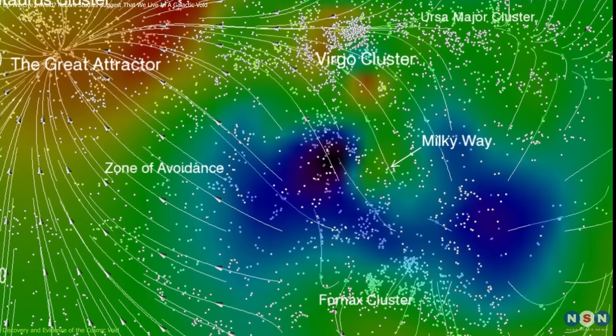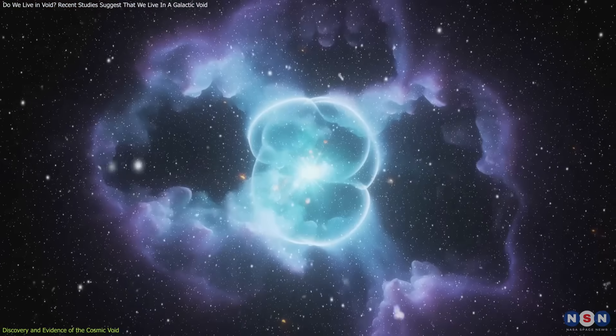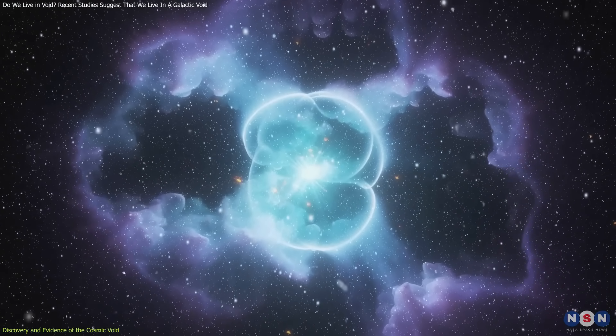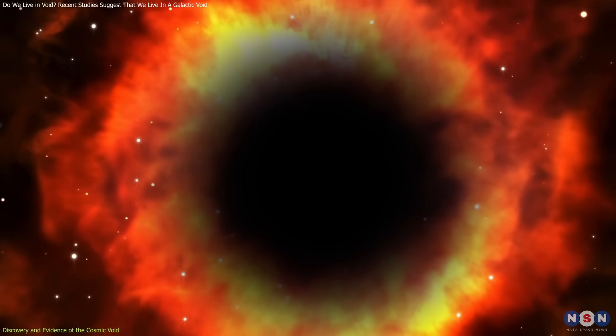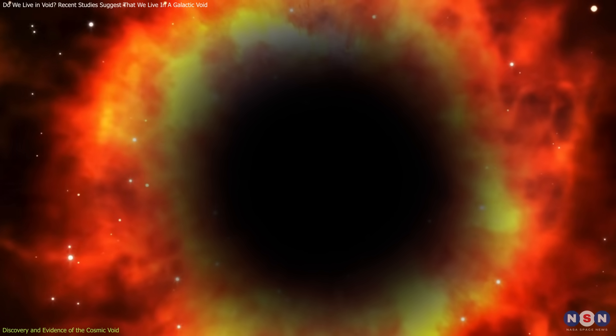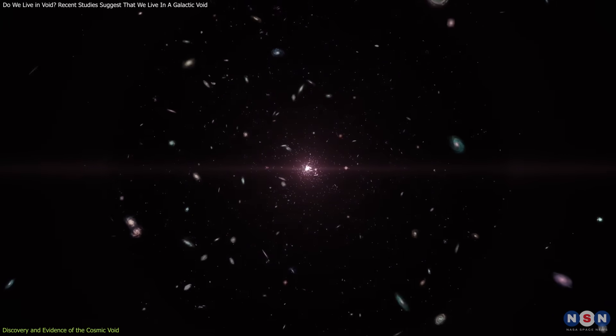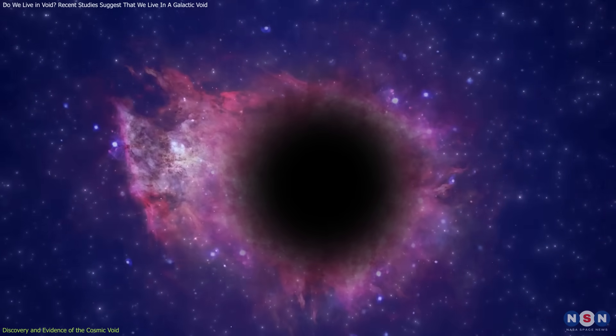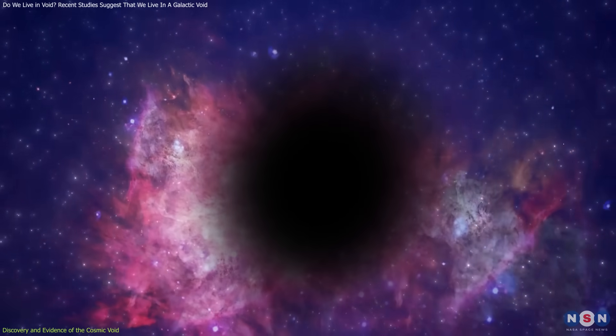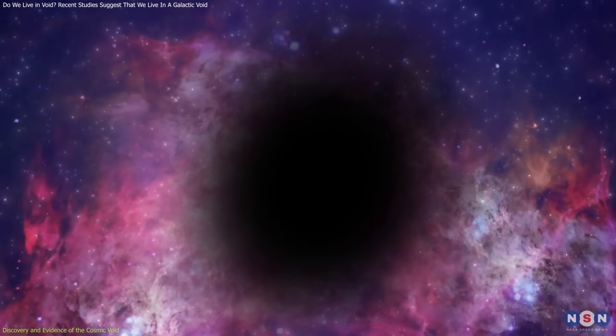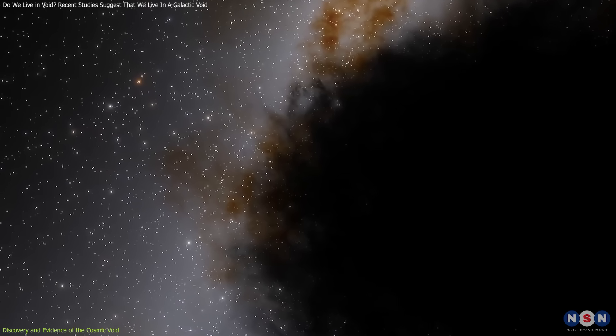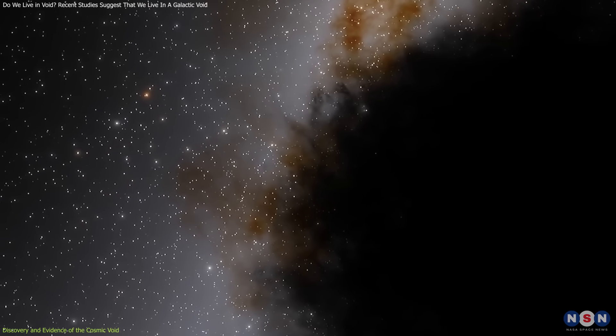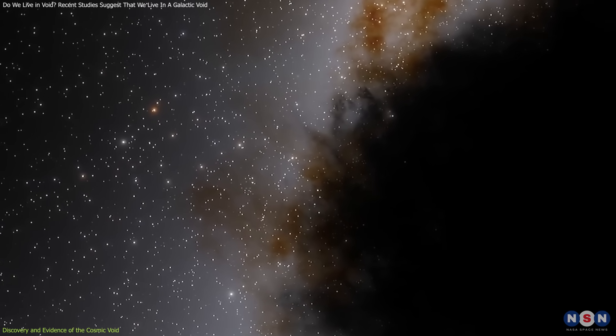This void, with its lower density, might be causing what Bannock describes as outflows of matter, where the gravitational pull from denser surrounding areas could be drawing matter out from the void, accelerating the local expansion rate. This idea of gravitational outflows introduces a radical notion that gravity itself might behave differently across the vast stretches of a void compared to more densely packed regions of space.